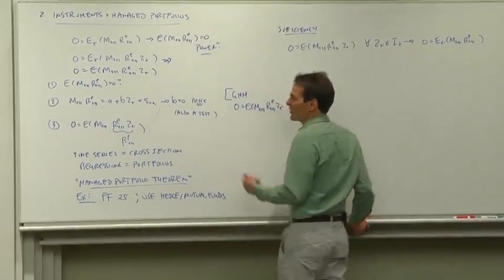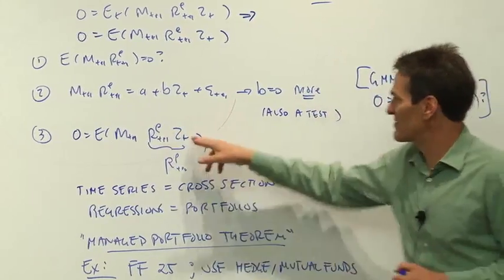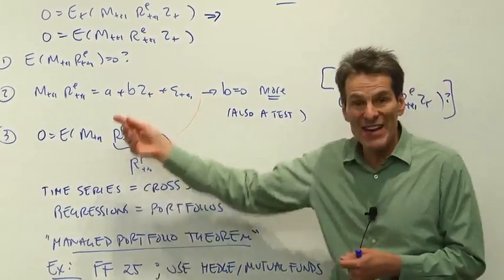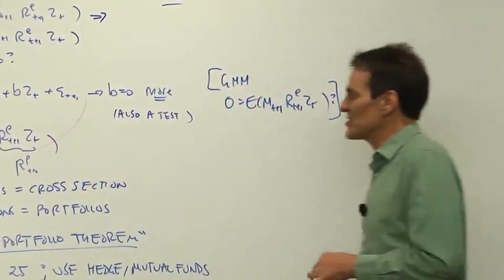There's a third way of looking at the same thing, E(MR times z). We can think of z as just an instrument or a regressor, forecasting returns in the 70s tradition or GMM in the 80s tradition.